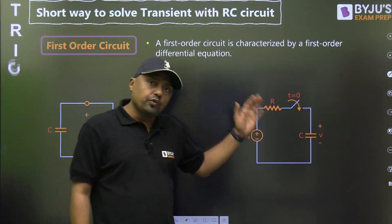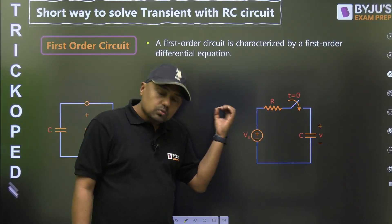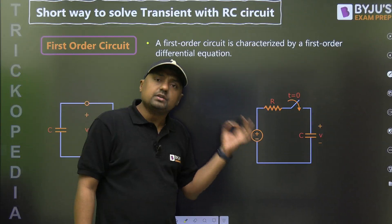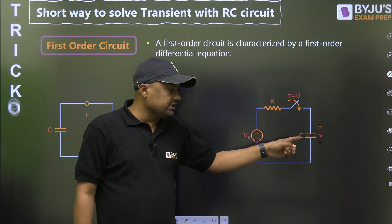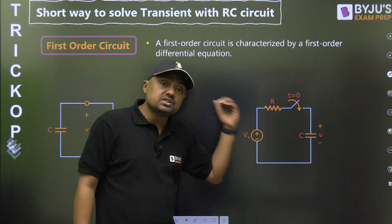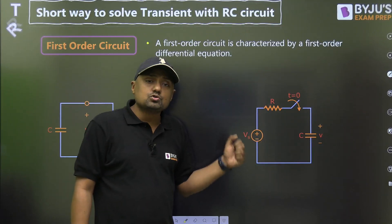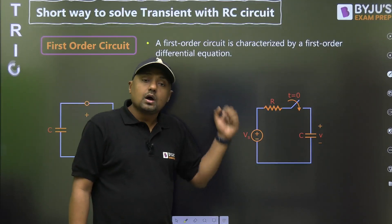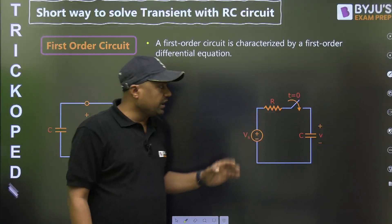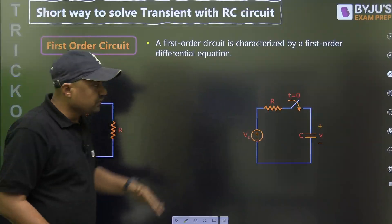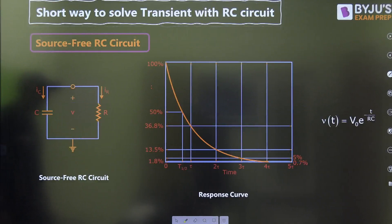The second important diagram is the RC circuit with a source. Here we are connecting a DC source. The question is: what is the steady state voltage across the capacitor? That is the RC circuit with source.